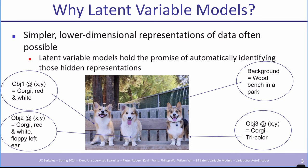A bit more motivation by example: imagine you want to represent an image. One way is pixel by pixel. Another way is to say there's a corgi on the left which is red and white, another corgi more towards the middle also red and white with a floppy left ear, a third corgi on the right which is tricolor, and in the background a wood bench in a park. Maybe what I just described is something you'd want the model to naturally know about.